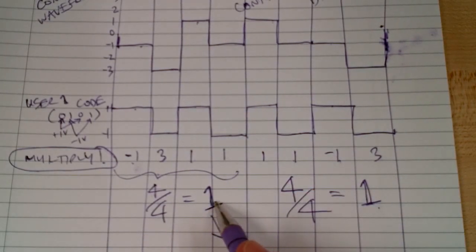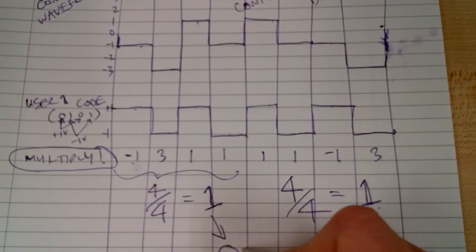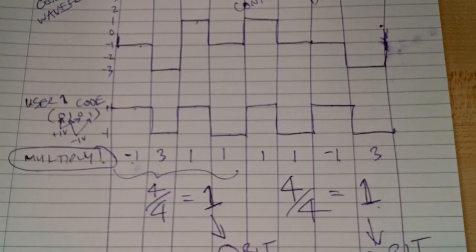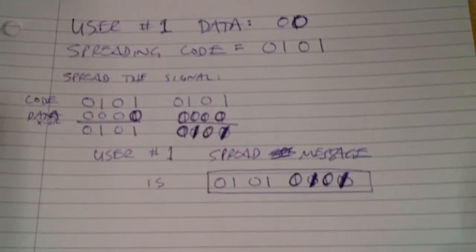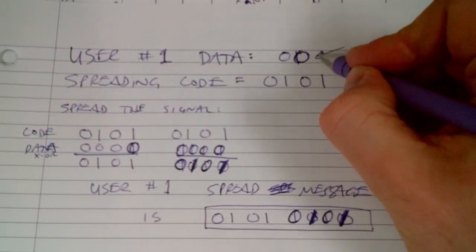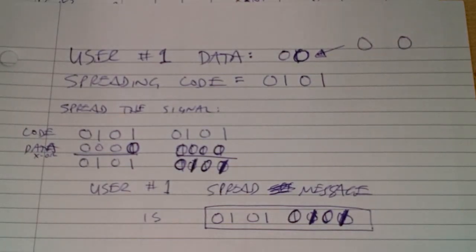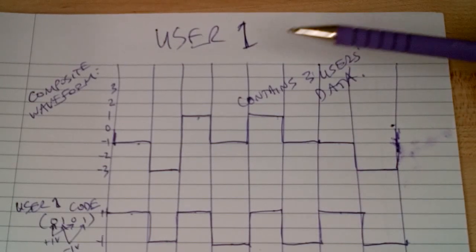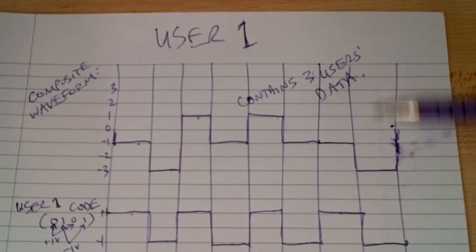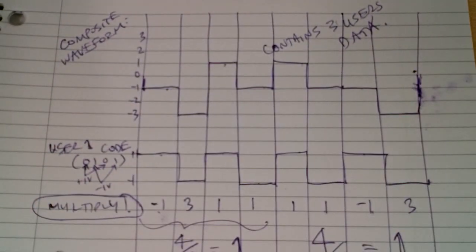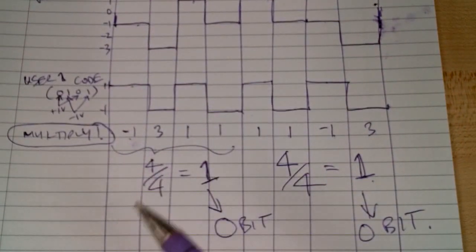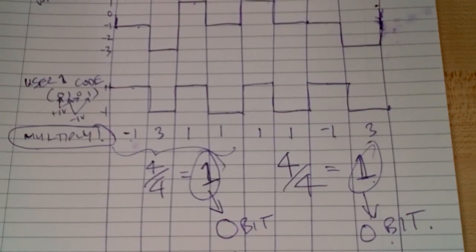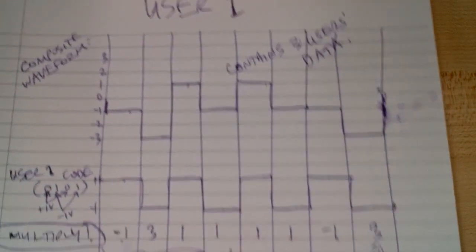So we have plus one and plus one. Plus one volt represents a zero bit, and plus one represents a zero bit. If you look at user one's original data, it was zero and zero. So what happened was: user one spread the signal with a spreading code, user two and three did the same, all three signals were added together, then we applied user one's code to the composite signal, and magically the original data was recovered: zero and zero. Now you can try it for user two and three, and hopefully you'll find the same thing happens.